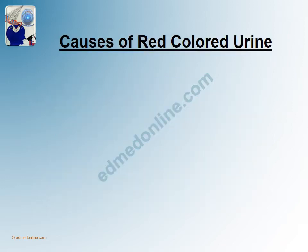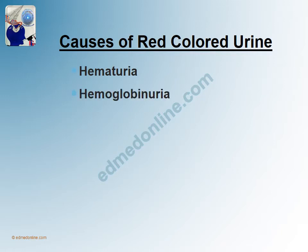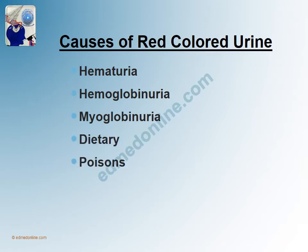Now let us first see what causes reddish discoloration of urine. It could be presence of RBCs, which is commonly termed as hematuria. It could be hemoglobinuria, myoglobinuria, dietary causes, poisons, and certain drugs.